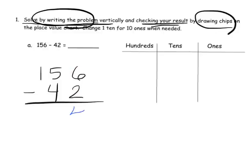In this case we do not need to unbundle anything, so six minus two is four. Then similarly we have five tens take away four tens — nothing needs to be unbundled, so we have one ten left over. In the hundreds place we have 100 and there's nothing to take away, so we have 100 left over. Our answer is 114. Now we should check it, so we're going to model it.